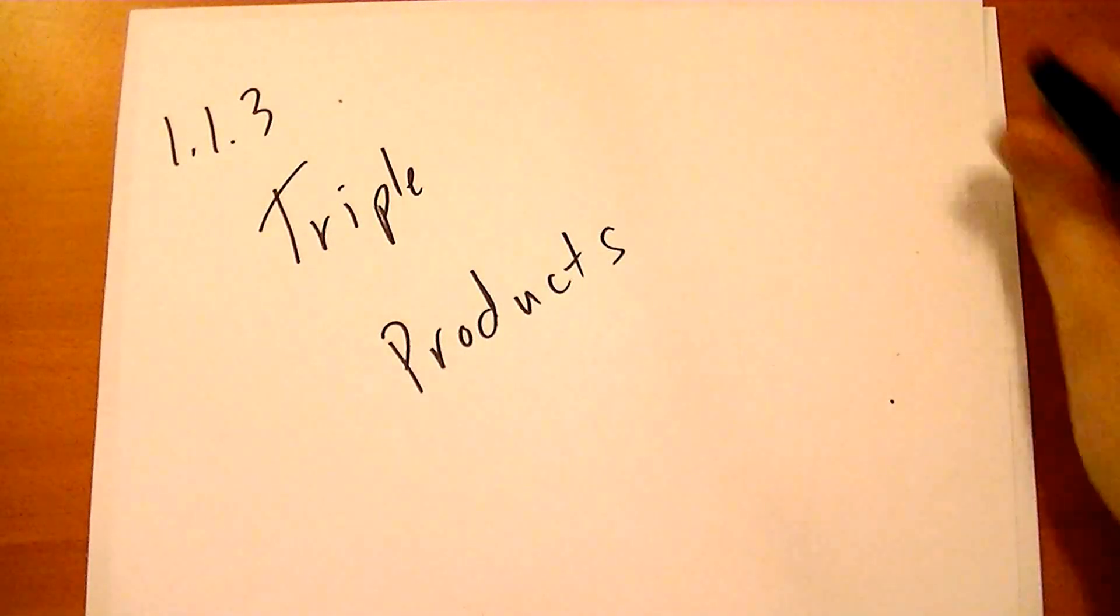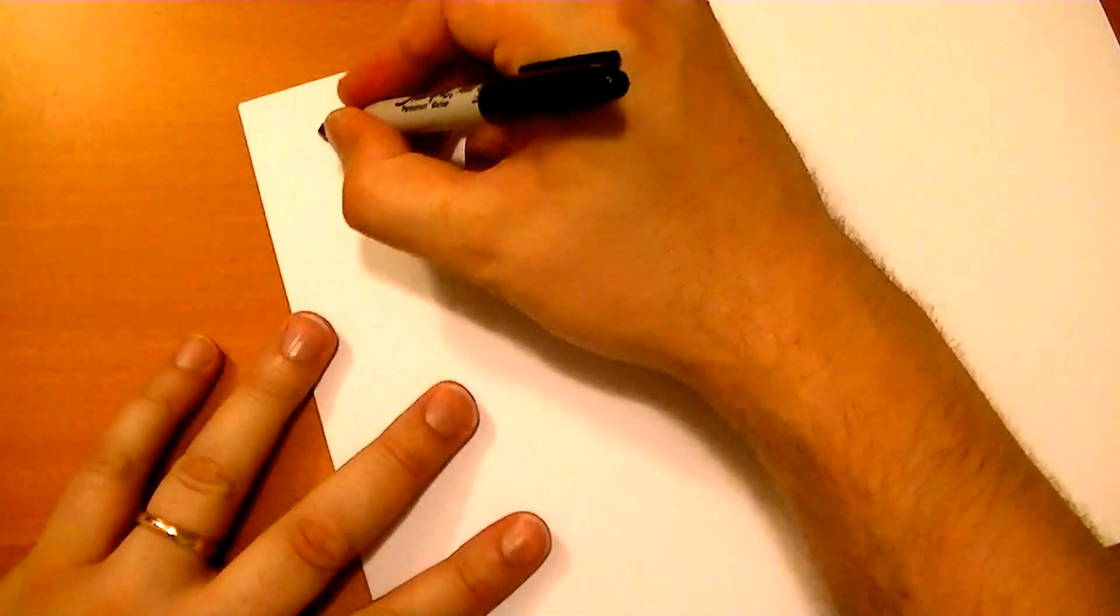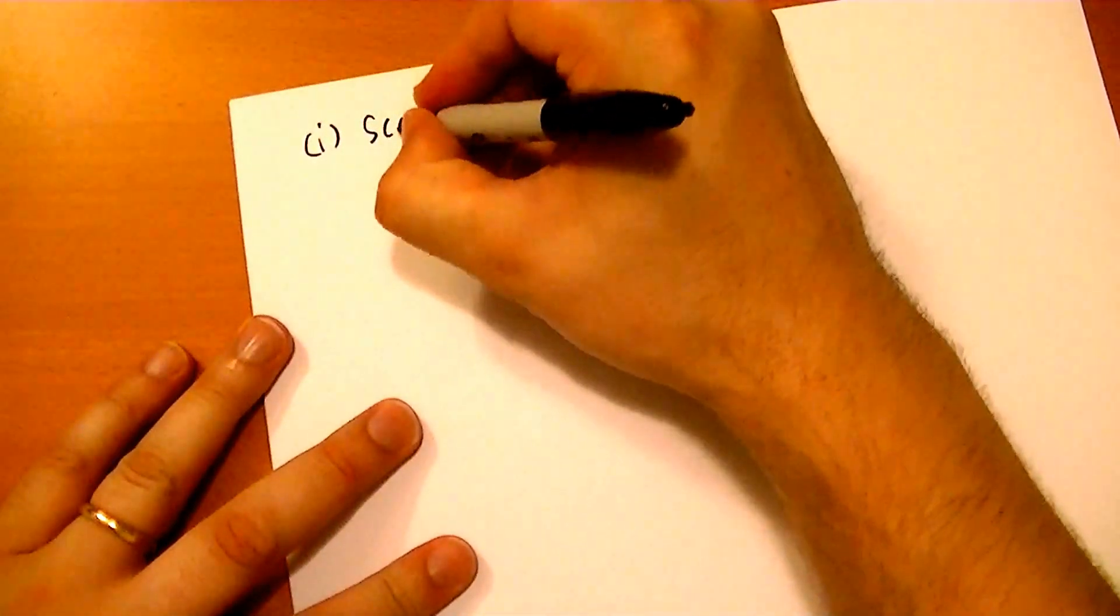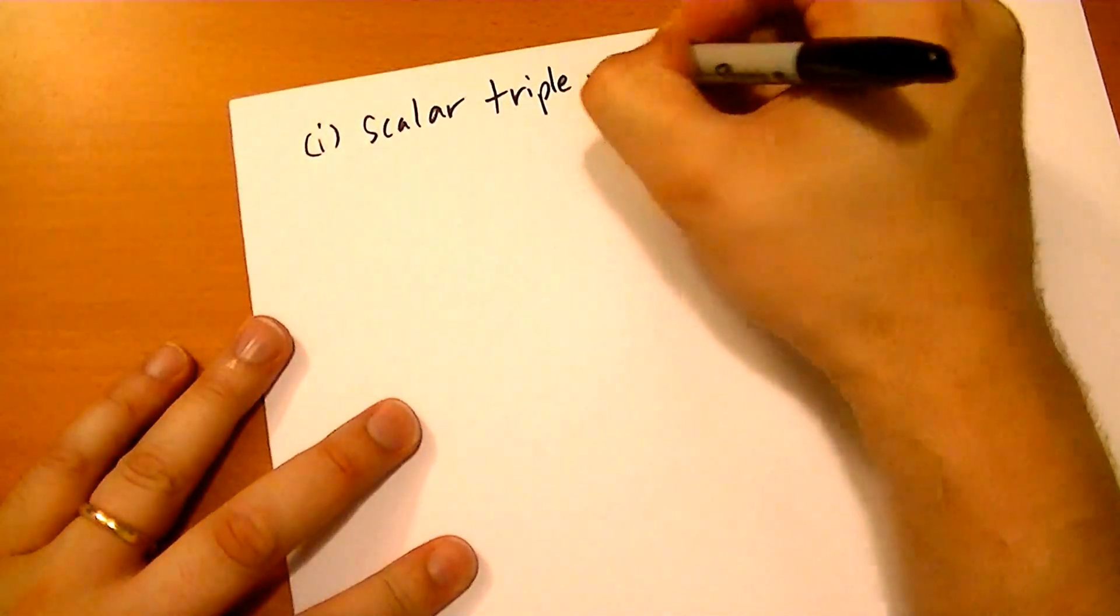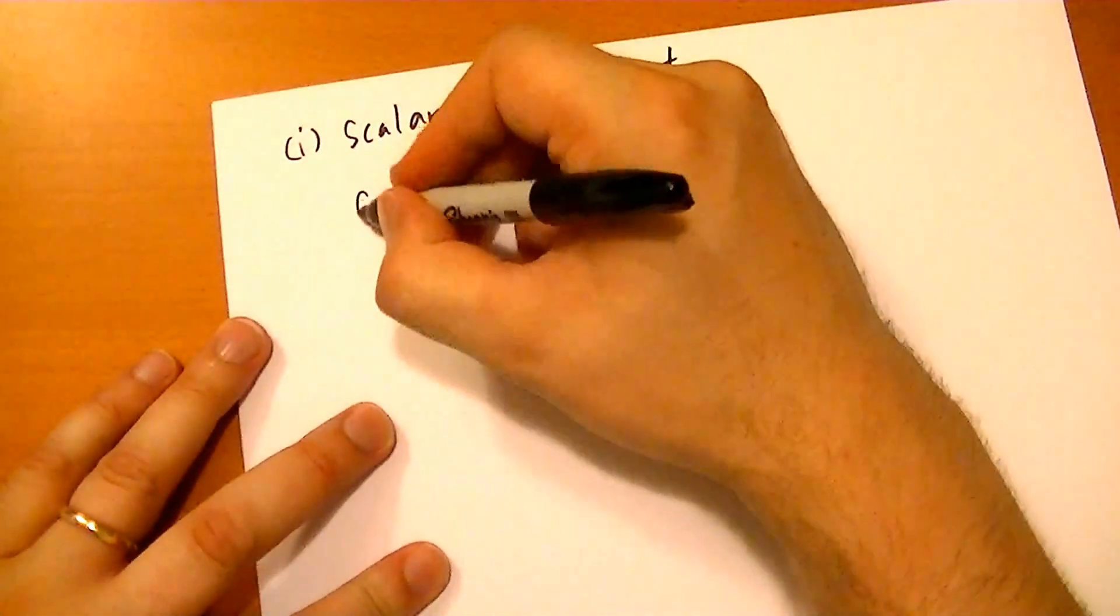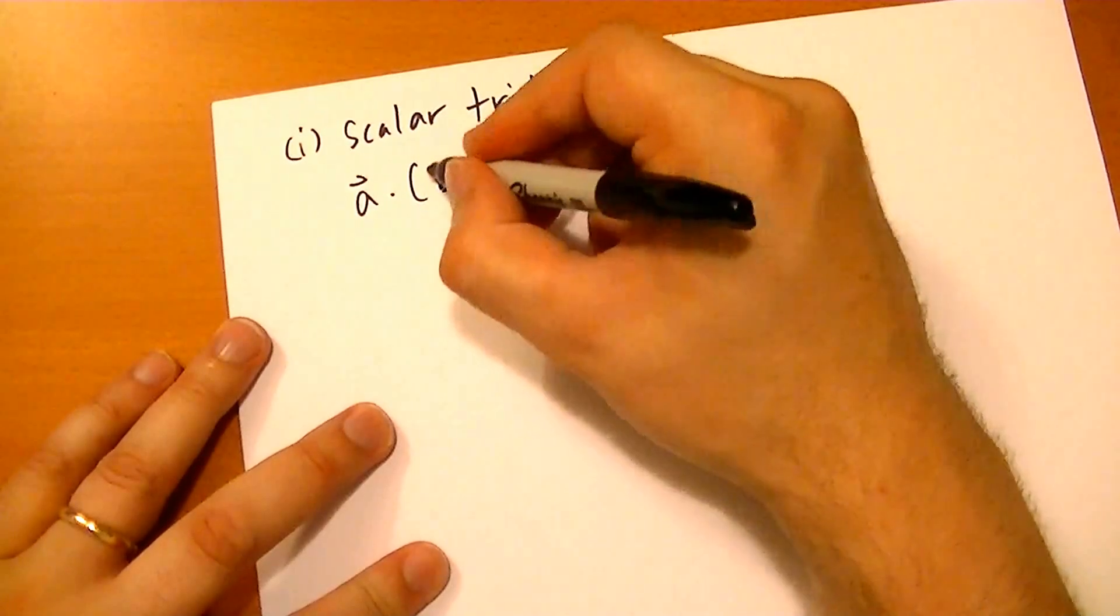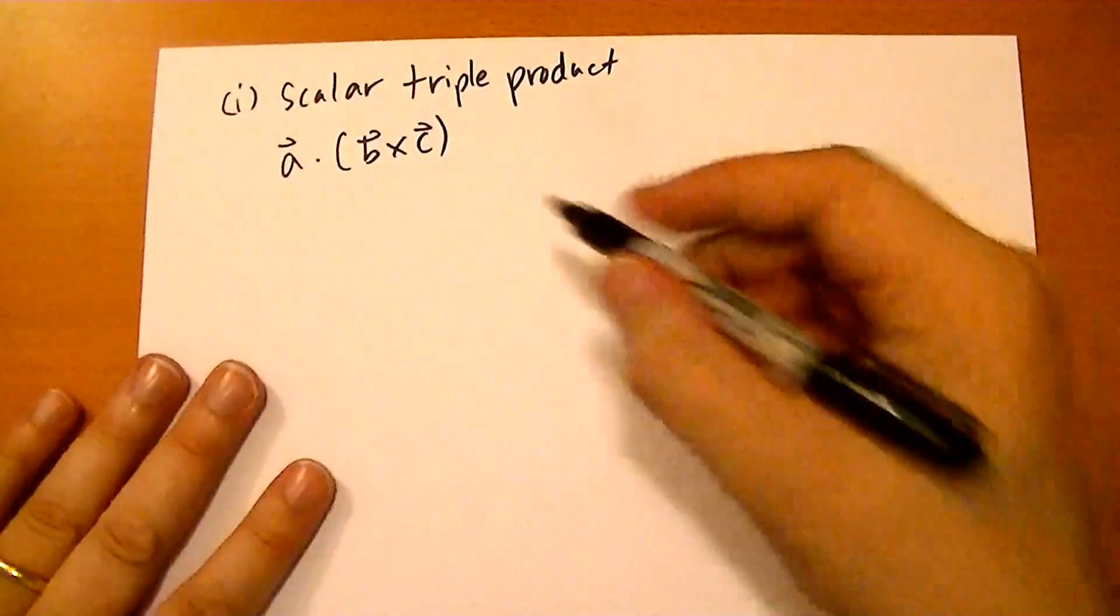Section 1.13: Triple Products. There are two triple products that are interesting. One is a scalar triple product, so named because it yields a scalar.